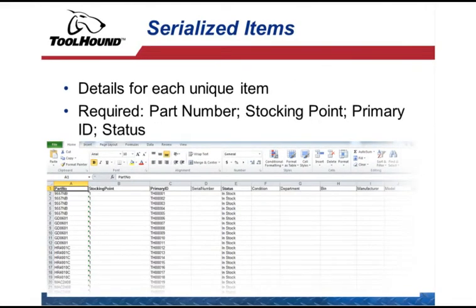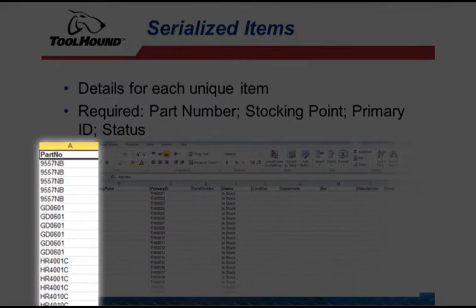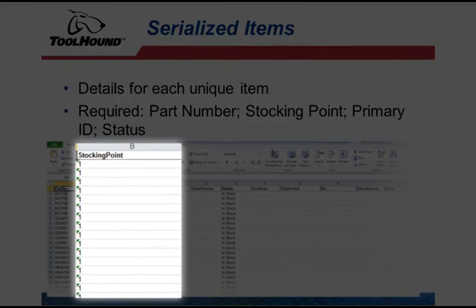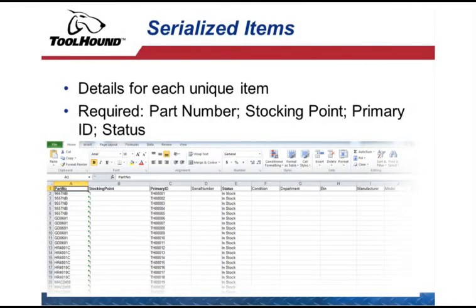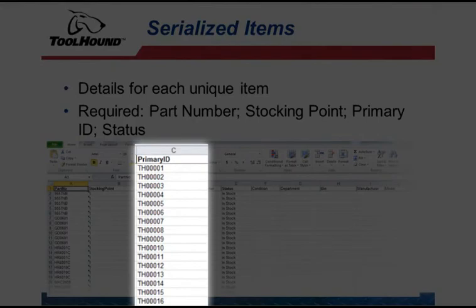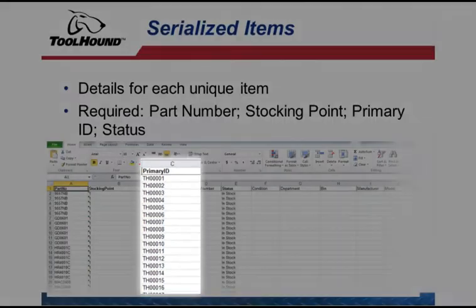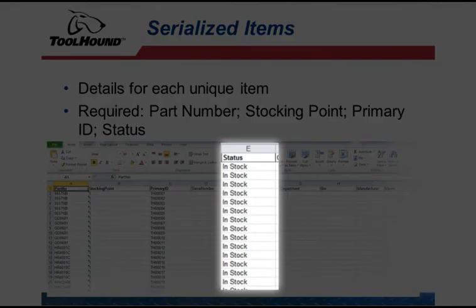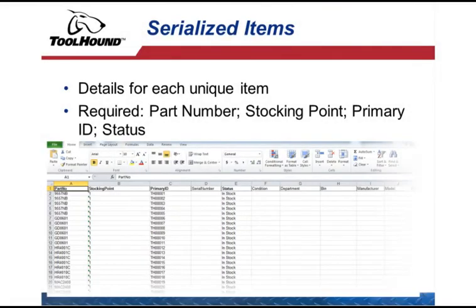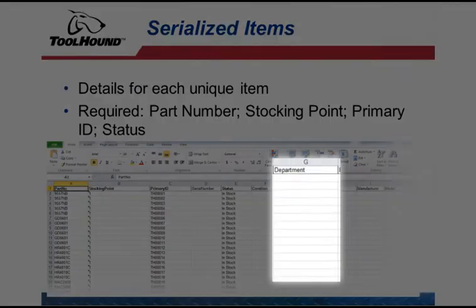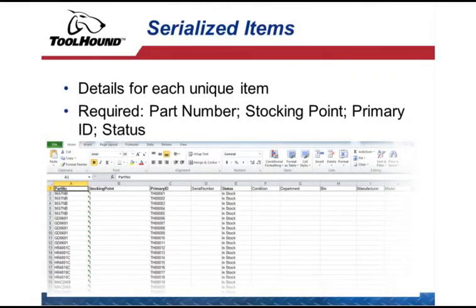The serialized items template contains detailed information for each unique inventory item. The required columns are: Part Number, which must already appear in the part number spreadsheet; Stocking Point, which is the ID of the stocking point location (also known as the tool crib); Primary ID, which is the primary asset ID for the tool, usually a barcode; and Status, which must be 'in stock', written out in full. Optional references — including vendor, manufacturer, condition, and department — must be added manually in ToolHound before importing the spreadsheet.